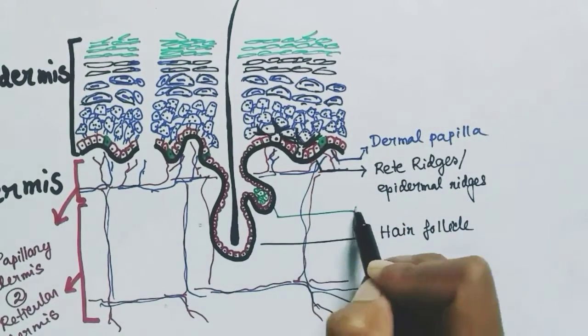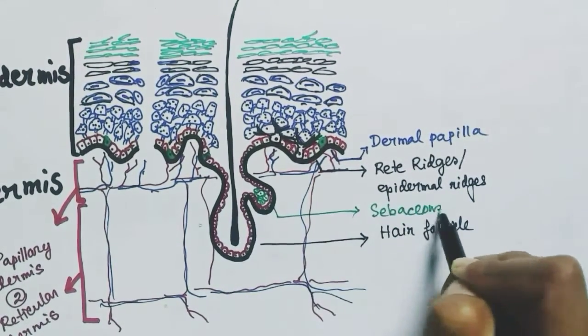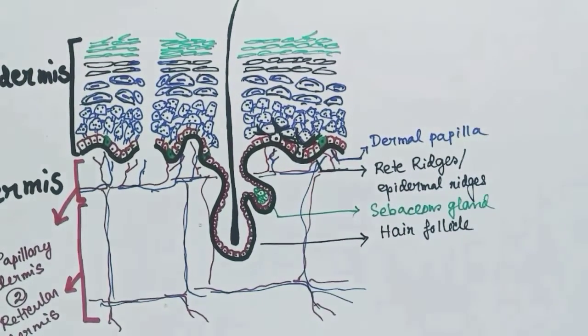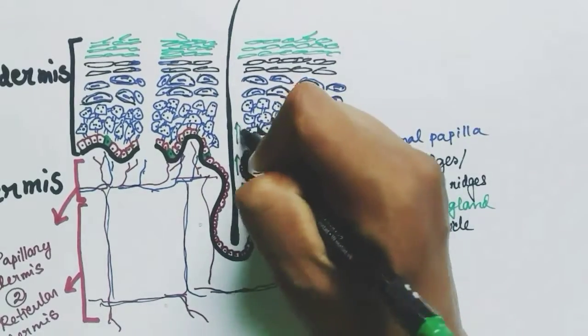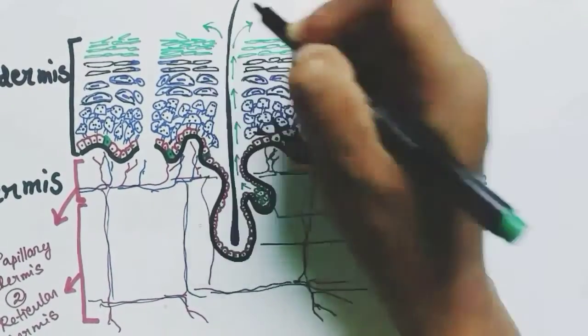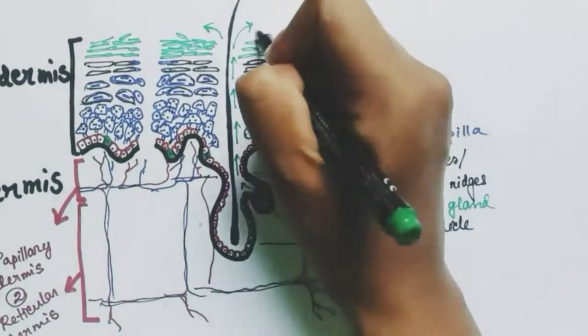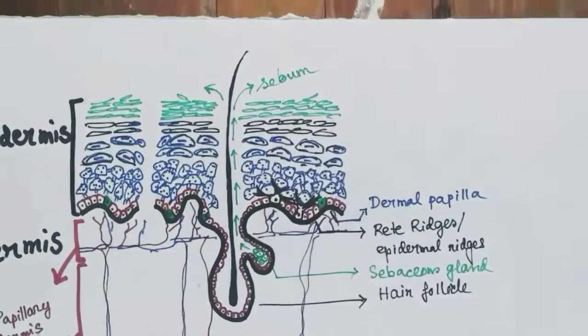The sebaceous glands produce sebum, and sebum is released onto the skin to make the skin oily.